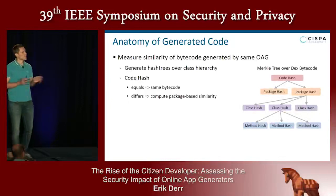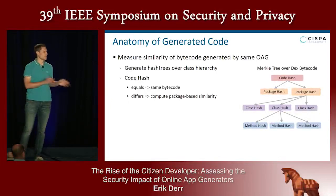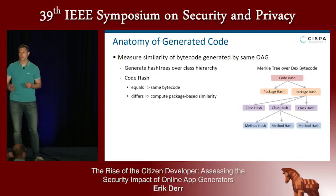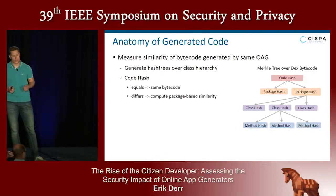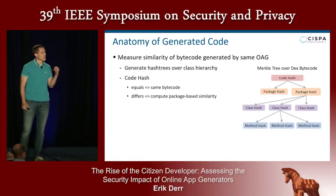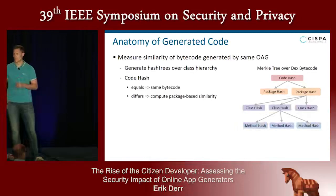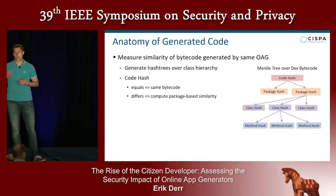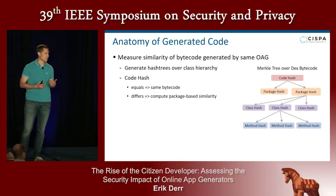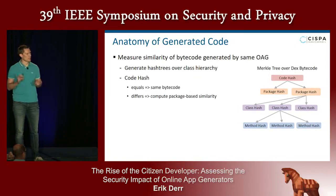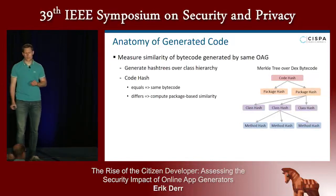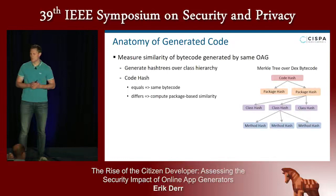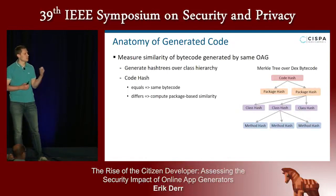We actually stumbled across this topic differently. We regularly conduct security analyses on our app repository, and we found large clusters of apps showing the exact same results — typically a sign of spam apps — but as we discovered, these were generated by online services. The first idea was that there's probably some kind of code reuse involved, so we measured the similarity of bytecode across apps generated by the same service. We adopted a technique used to detect third-party libraries: generating hash trees, so-called Merkle trees, over the class hierarchy extracted from the bytecode.